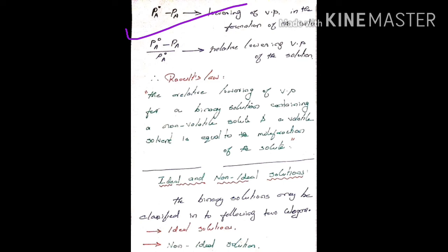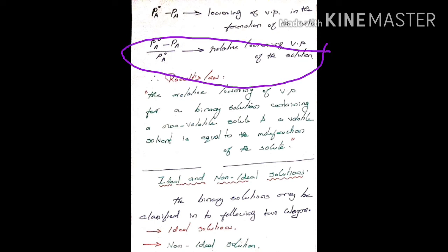P0 minus PA is the lowering of vapor pressure. P0A minus PA divided by P0A is the relative lowering of vapor pressure.